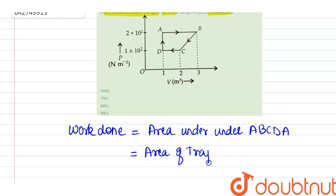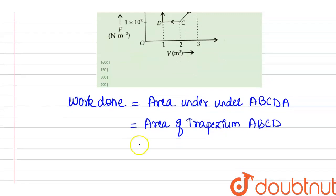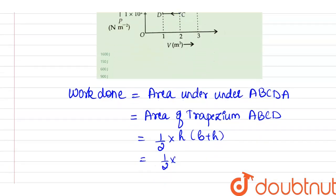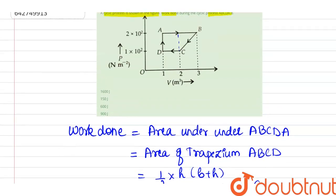which is ABCD. We know that area of trapezium will be half into height into sum of parallel sides. So this will be half into height, which is 2 into 10 to the power 2 minus 1 into 10 to the power 2, this into B plus H.